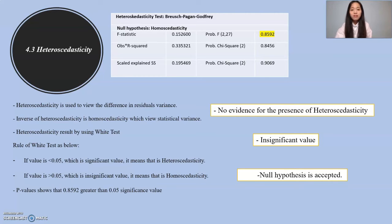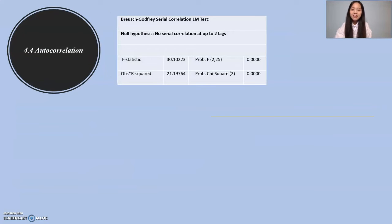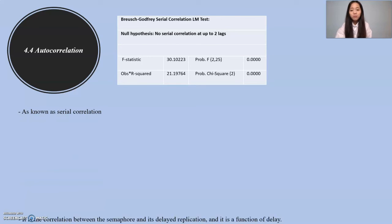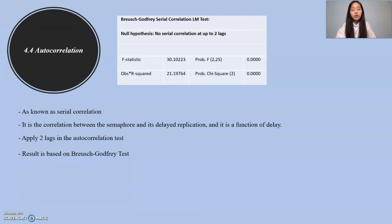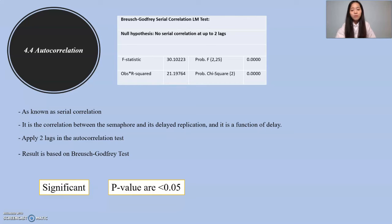Therefore, the null hypothesis is accepted. Moving to 4.4, autocorrelation. Autocorrelation, also known as serial correlation, is the correlation between a time series and its lagged replication, and it is a function of the lag. We apply two lags in this autocorrelation test. All results are based on the Breusch-Godfrey test. As you can see from the table, the p-value is smaller than 0.05, so it is a significant value. Therefore, autocorrelation exists in this research.